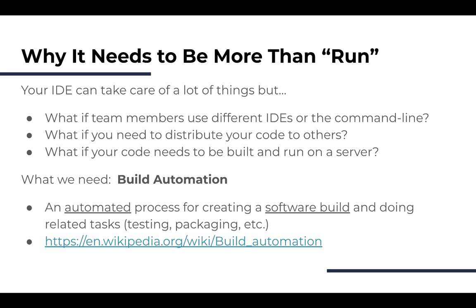Build automation is an automated process for creating a software build and also doing related tasks like testing or packaging. A software build is a fully constructed version of your software that can be run and executed. We might want to build it, build and run it, or test it — and we need it to be automated so we can repeat it, run it as a script, or run it on a server. There's a Wikipedia page that has a general overview on build automation with details on specific tools.